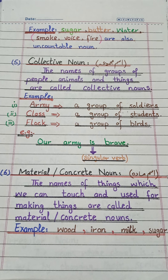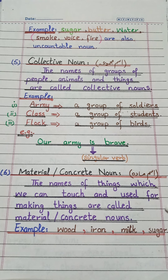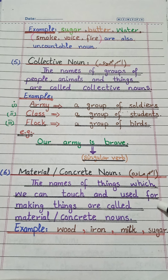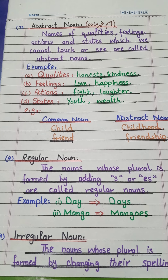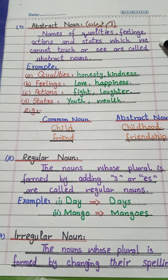Our next type is material/concrete noun. The names of things which we can touch and use for making other things are called material nouns. Any raw material used to make other things is a material noun. Examples: wood, iron, milk, sugar — these are called material nouns.